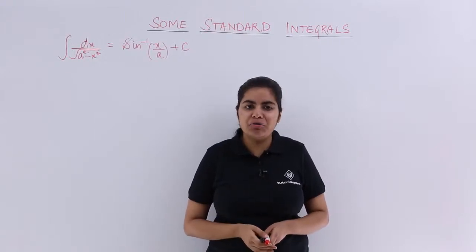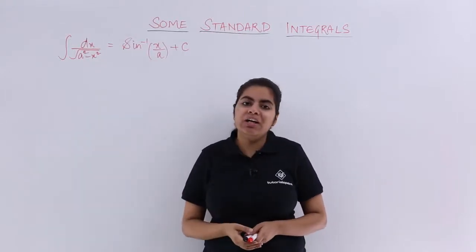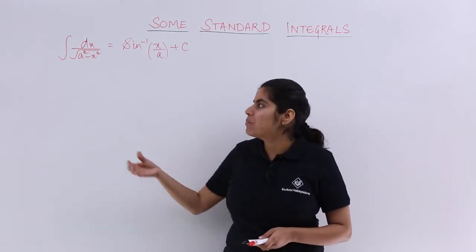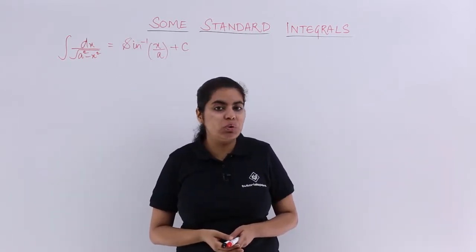Another standard integral that we have to prove is dx upon under root a square minus x square. Now I have in the denominator root, so again I have to go with some substitution.